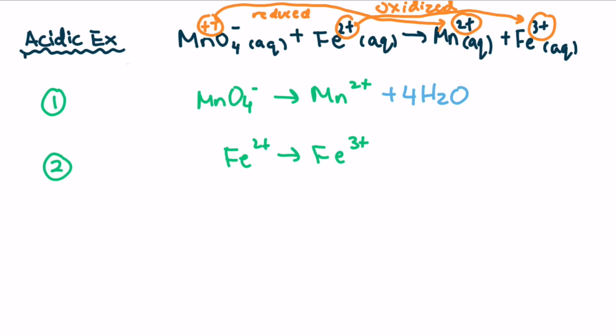Step number four: we're going to add all of the hydrogens by adding hydrogen ions. In our first equation, we see we have eight hydrogens on the right side, so we have to add eight hydrogen ions on the left side. This way, the number of hydrogens is balanced on both sides. Now let's look at equation number two — it's perfect because there's no hydrogen, so we move on.